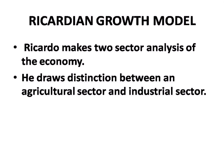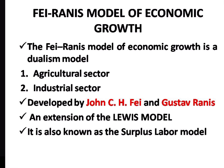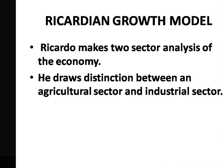Regarding the growth model, we take a two-sector analysis which draws a distinction between the agricultural sector and the industrial sector. The Ranis-Fei model of economic growth is a dualism model with two sectors: the agriculture sector and the industrial sector. This model was developed by John C.H. Fei and Gustav Ranis, and is an extension of the Lewis model. It is also known as the surplus labour model.